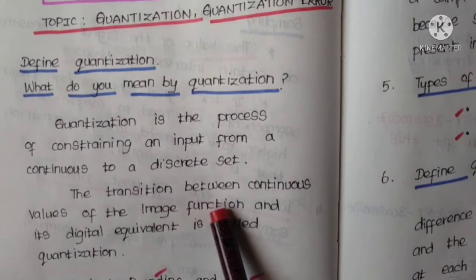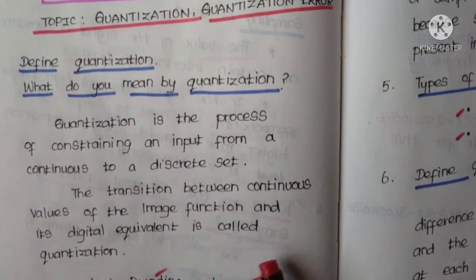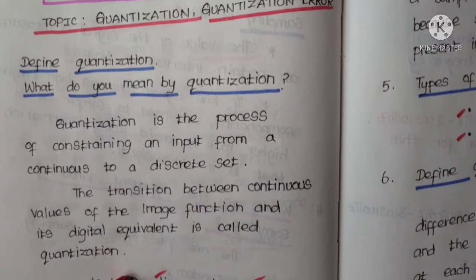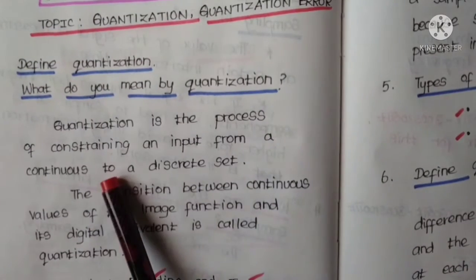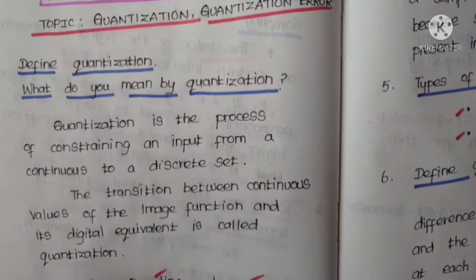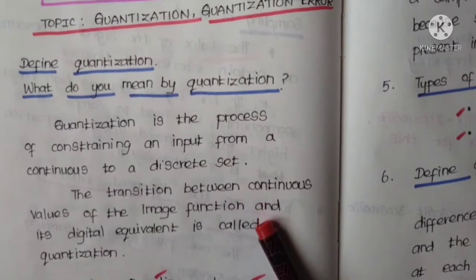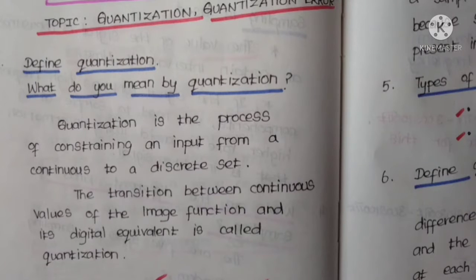The transition between the continuous values of the image function and its digital equivalent is called quantization. In other words, quantization is just a process of constraining an input from a continuous set of values to a discrete set of values. This is what is meant by quantization.